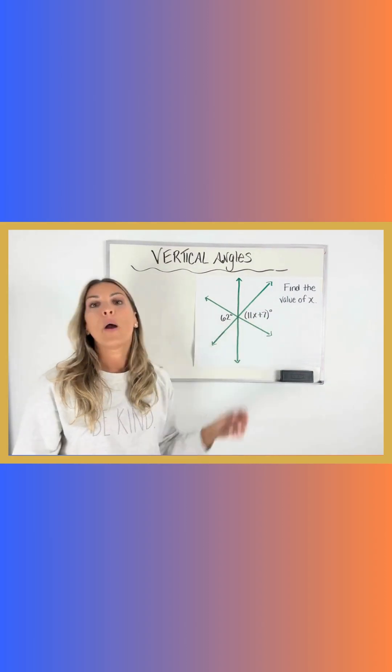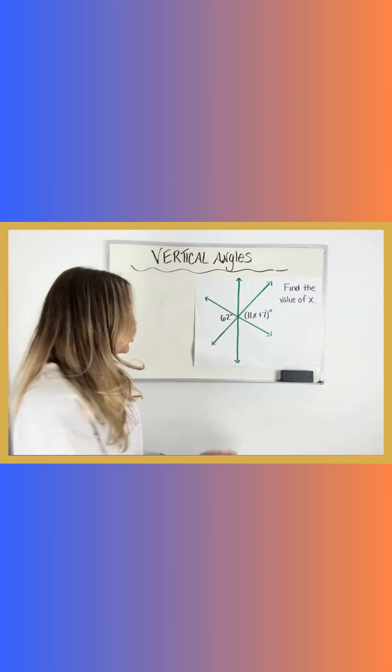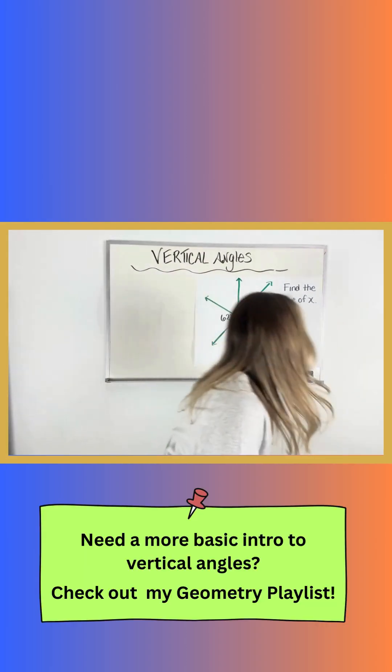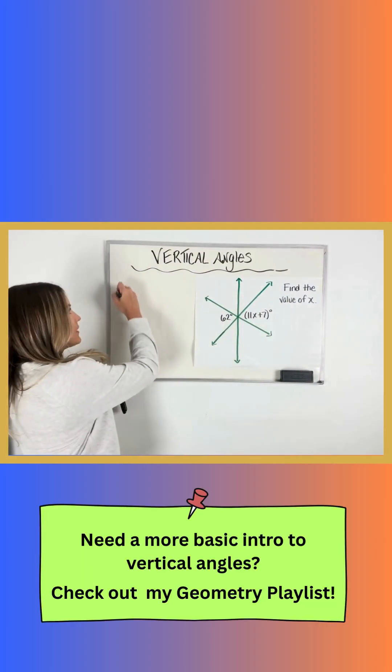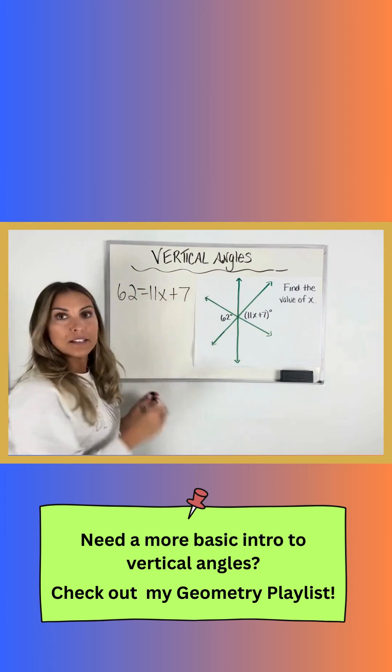These are vertical angles. Because they're vertical angles, I know that they're equal in measure. So I'm able to set up an equation that shows me that 62 is equal to 11x plus 7.